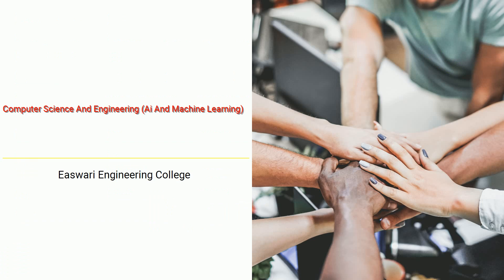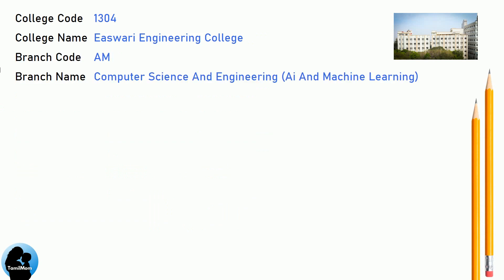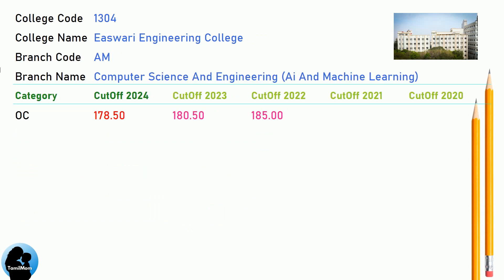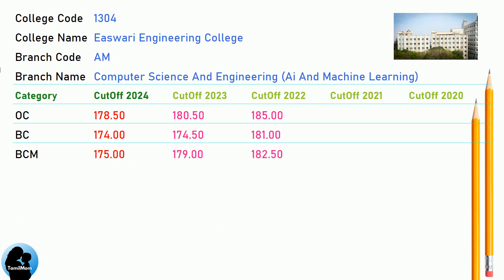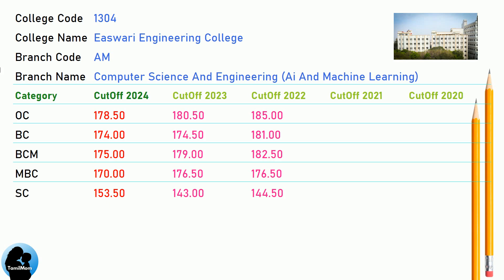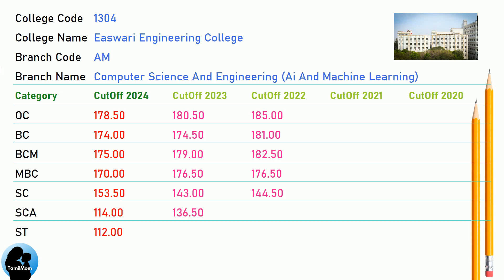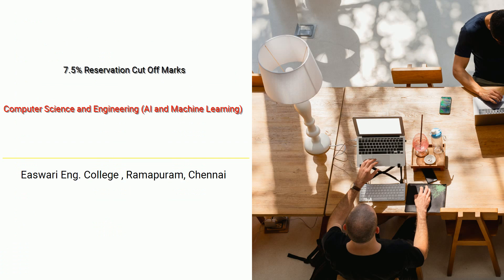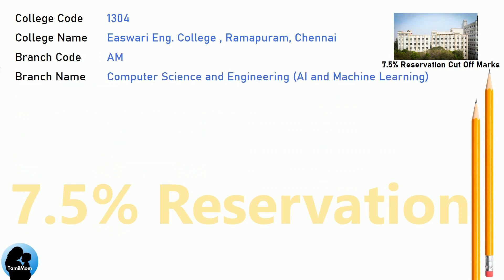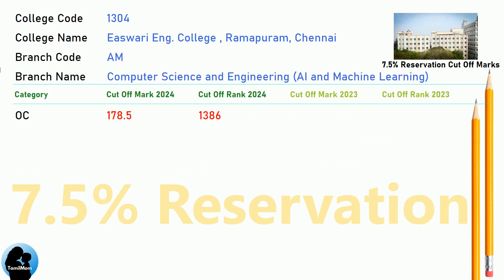DNA Cut-Off for Eshwari Engineering College in Computer Science and Engineering, AI and Machine Learning. DNA 7.5 Reservation Cut-Off for Eshwari Engineering College in Computer Science and Engineering, AI and Machine Learning.